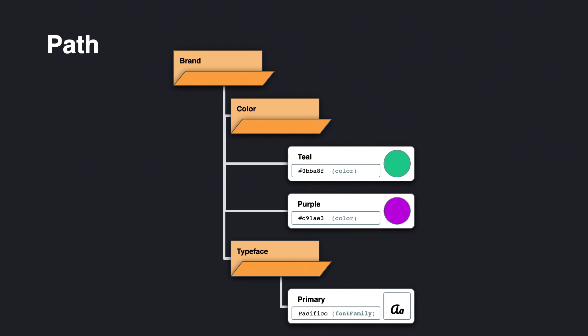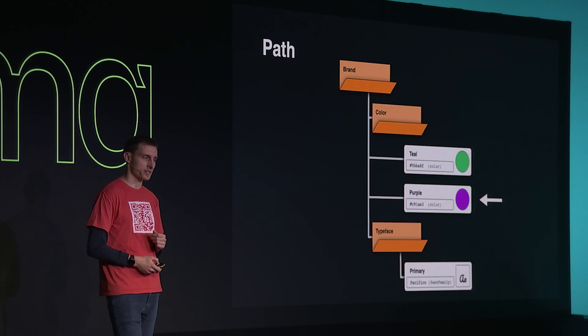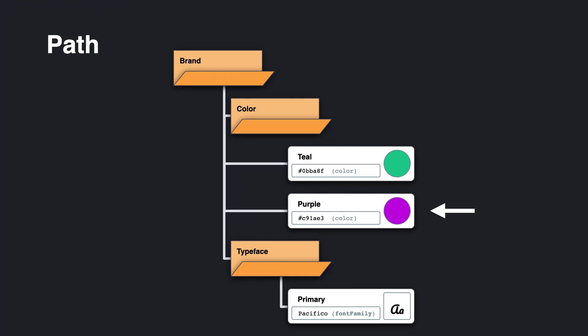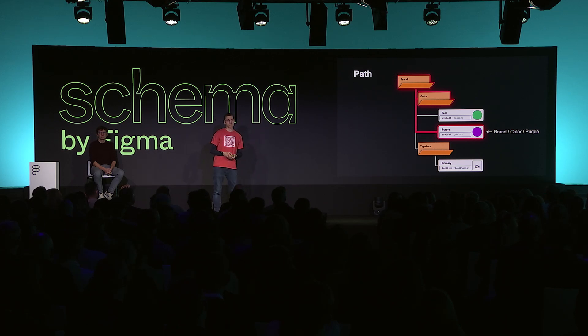When working with groups, a key piece of terminology is what we call the path — just like the path you have with folders and files on your computer. It's the route to a specific token. Using the purple token as an example, its path would be 'brand / color / purple'. That uniquely identifies that token within the file. Different tokens in different groups could have the same name, but their path will always be unique within the file. This is particularly relevant for developers, as tools that export tokens as code will likely use the path as the basis for the variable name.